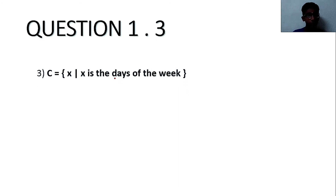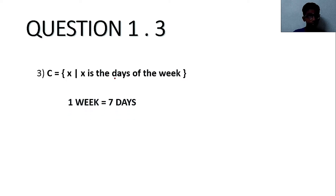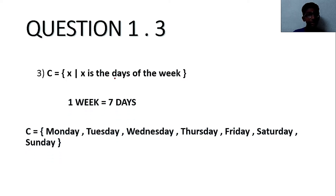C = {x | x is the days of the week}. This is in set builder form. All of us know that a week contains 7 days, so we change this set builder form into roster form. We write C = {Monday, Tuesday, Wednesday, Thursday, Friday, Saturday, Sunday}, so the cardinal number of C is equal to 7.